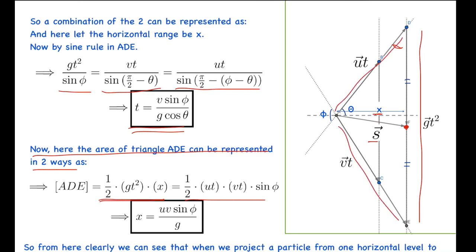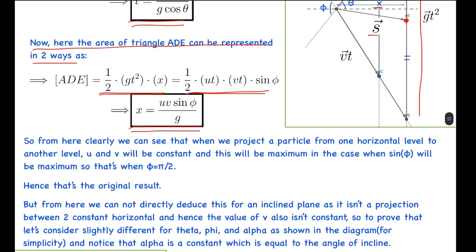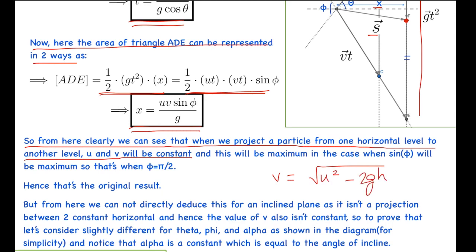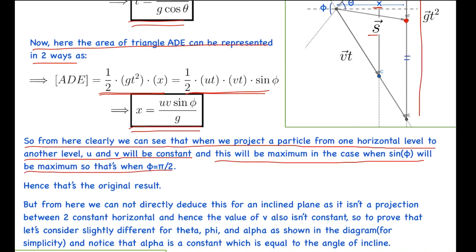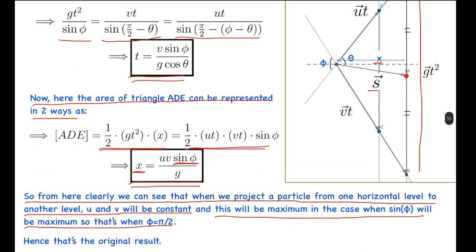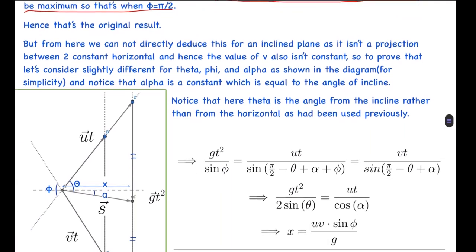From x = uv·sin(φ) / g, one part of the result can be directly proved. When projecting a particle from one horizontal level to another, u and v are both constant — v equals √(u² ± 2gh) depending on height — so the only variable is sin(φ). Therefore x is maximum when sin(φ) is maximum, i.e., when φ = π/2. This directly proves that for projectile motion between two different horizontal levels, the final velocity must be perpendicular to the initial velocity.